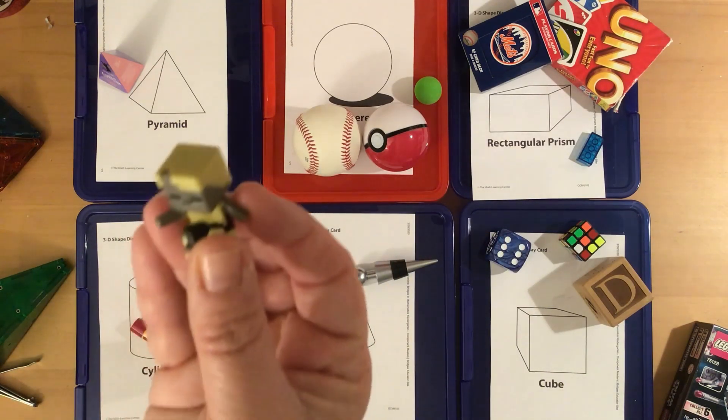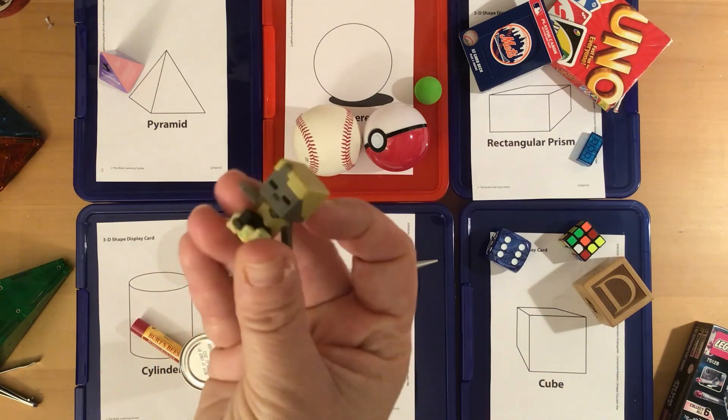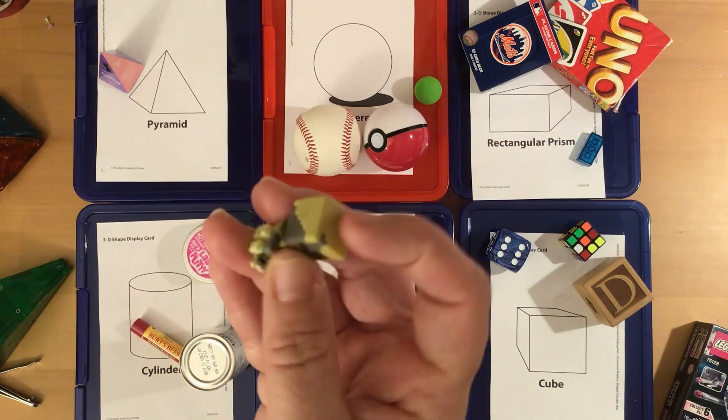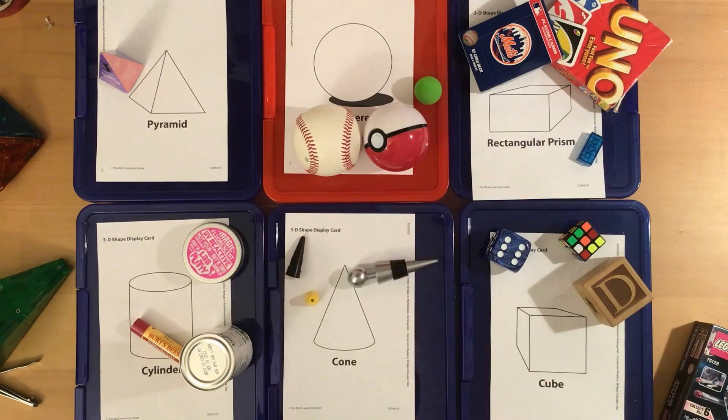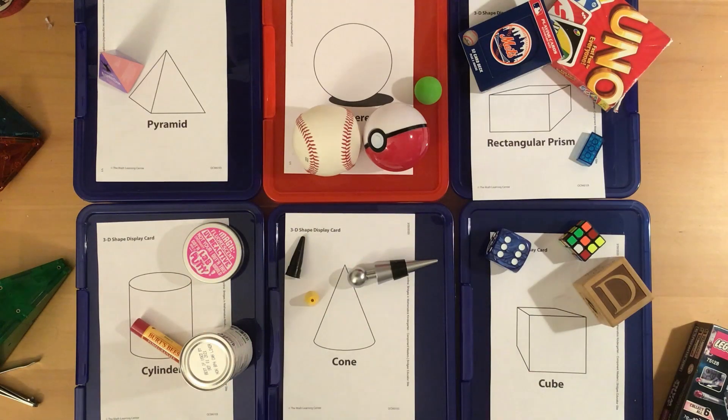I found this Minecraft guy. Look at his head. I see lots of flat square faces. Where should that go? Right, with the cubes.